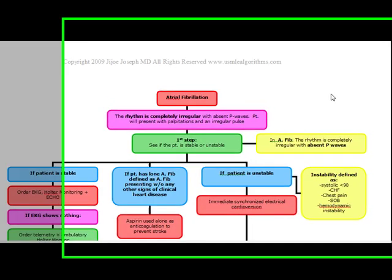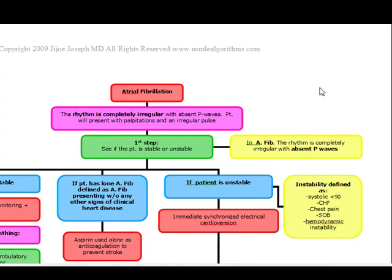The next topic is atrial fibrillation, also known as AFib. The first thing to remember is that in AFib, the rhythm is going to be completely irregular. This patient is going to present with palpitations and an irregular pulse.